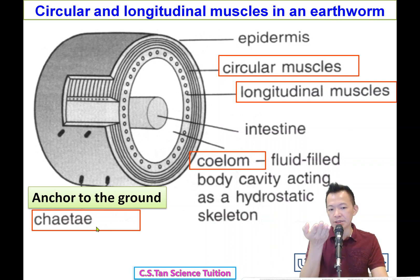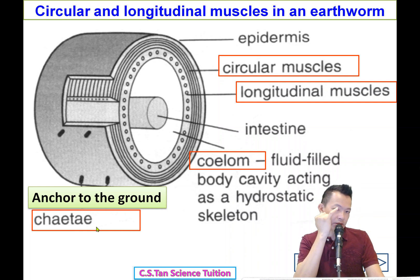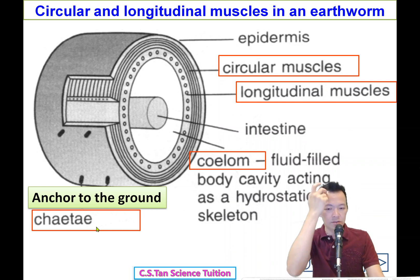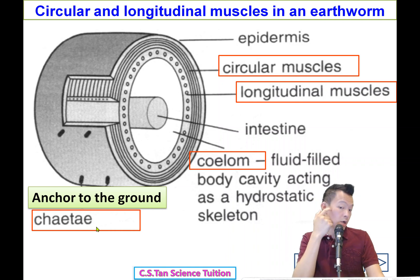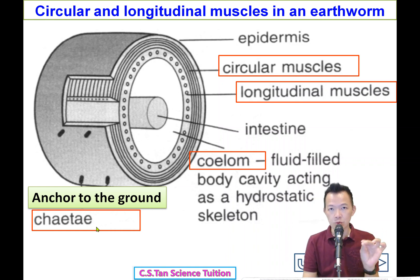The setae are used to anchor onto the ground — they grip the ground. So the function of the setae is to anchor the earthworm to the ground. Now, how does the earthworm actually move?